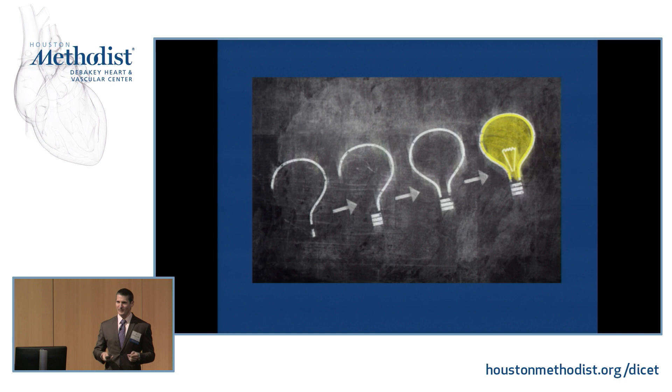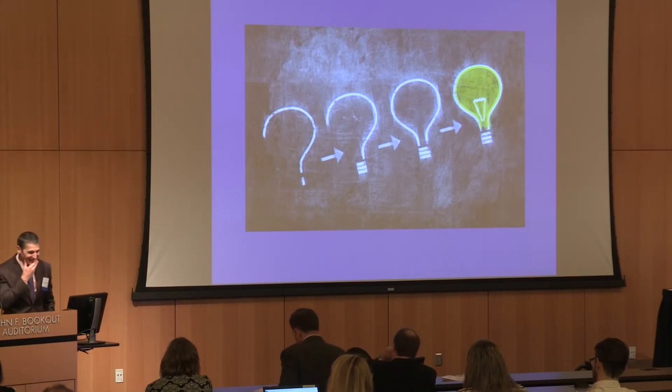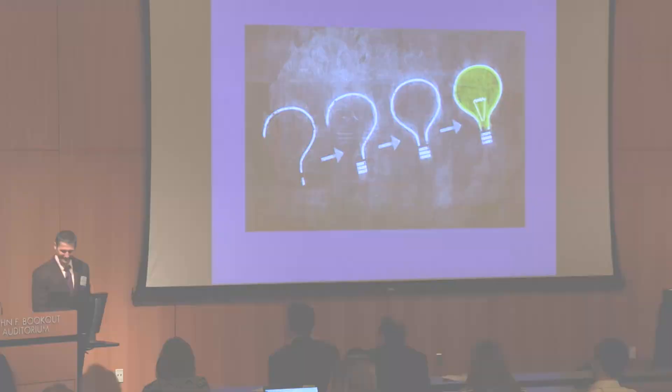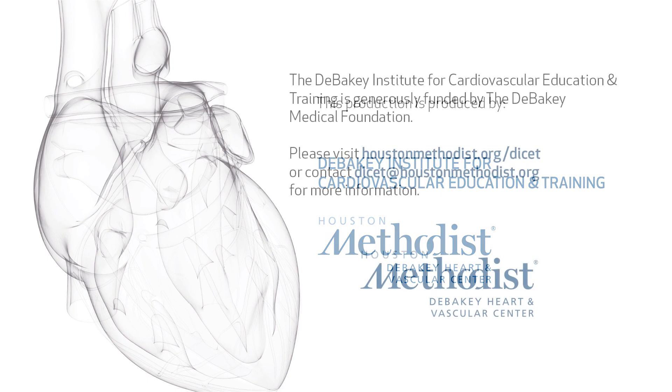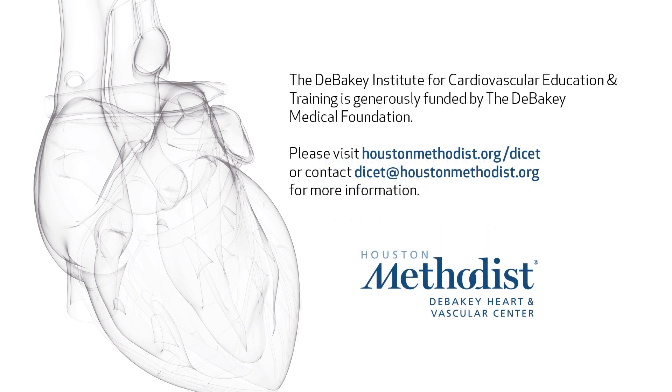When do we replace pulmonary valves based on the new guidelines? The new guidelines recommend pulmonary valve replacement for severe pulmonary valve insufficiency when a patient has symptoms of heart failure that cannot be attributed to anything other than the severe pulmonary valve insufficiency — that's a Class 1A recommendation. In asymptomatic patients with progressive right ventricular dysfunction or dilatation, it is reasonable — Class 2A or 2B — to replace the pulmonary valve with the goal of preventing long-term sequelae of right heart failure.